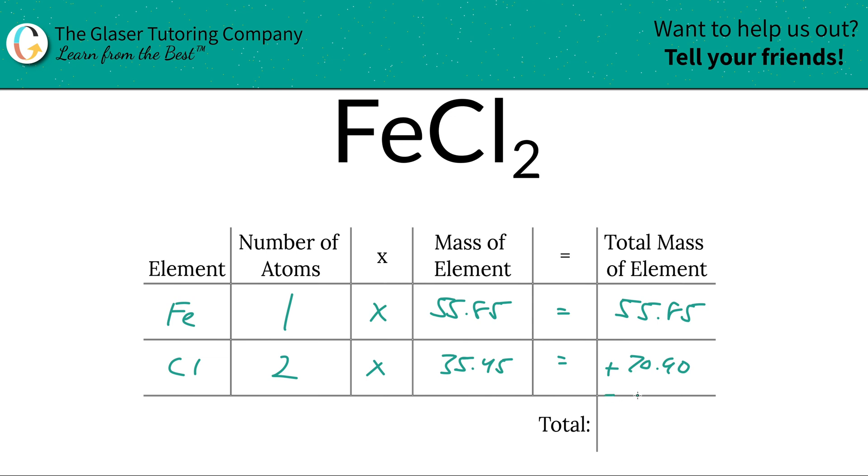To find the total mass of the entire compound is very simple. Just add up this column, and that works out to be 126.75. Why do we do this? Because we need to find the total mass of the compound in order to find the percent compositions of each element. That's the first step.